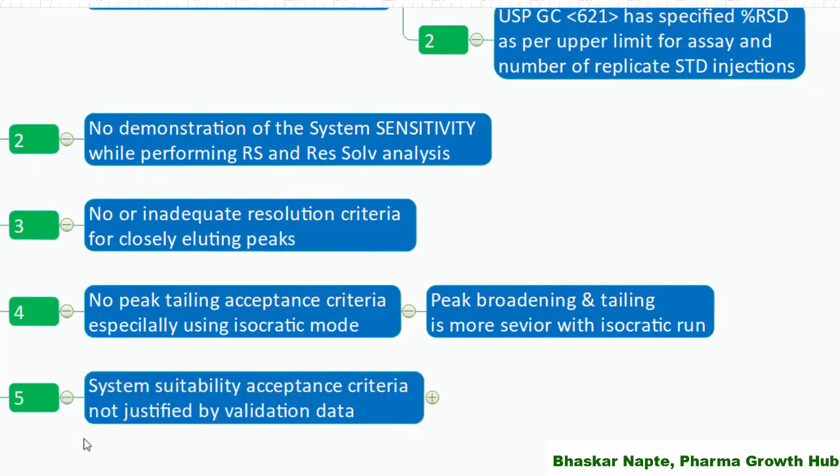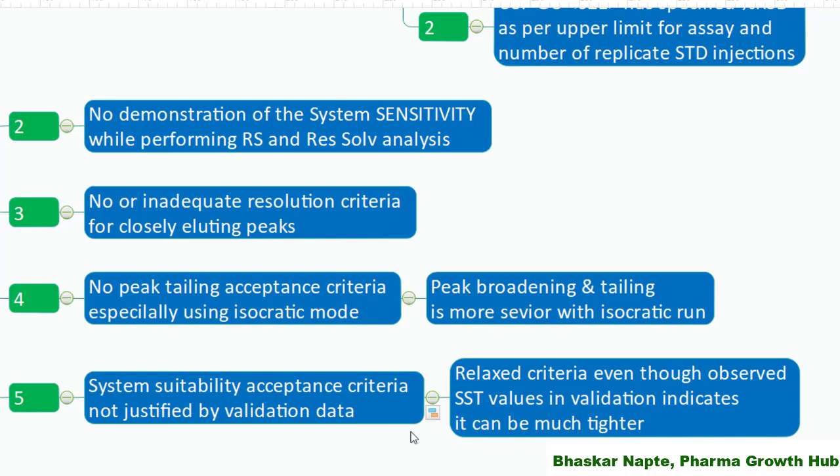System suitability acceptance criteria not justified by validation data. Whatever acceptance criteria you propose for system suitability must also be justified by your validation data. It has been found that applicants tend to set relaxed system suitability criteria even though observed values during validation indicate they could be much tighter. For example, if you propose percent RSD for related substances at not more than 10% for six replicate injections, but validation consistently shows less than 5%, those details must be considered when setting system suitability criteria post-validation.